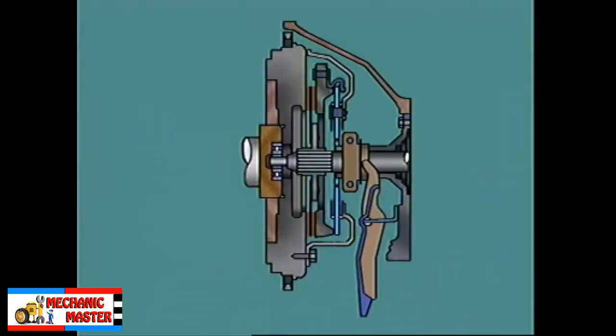Torque is transmitted from the flywheel through the friction disc to the central hub and to the transmission.